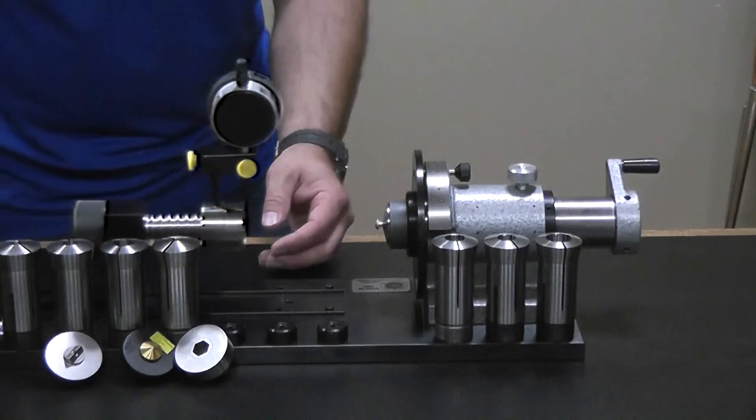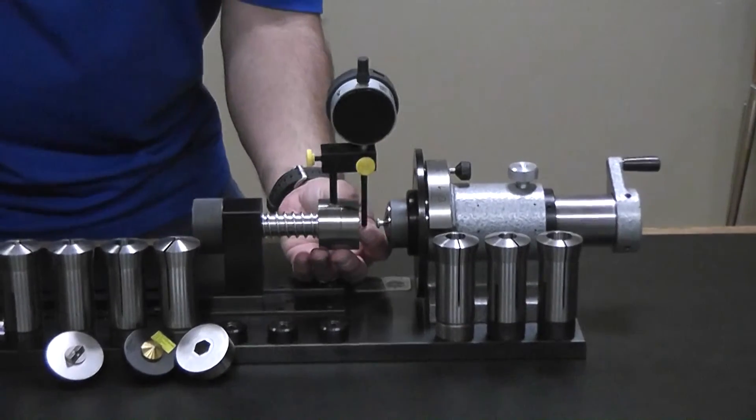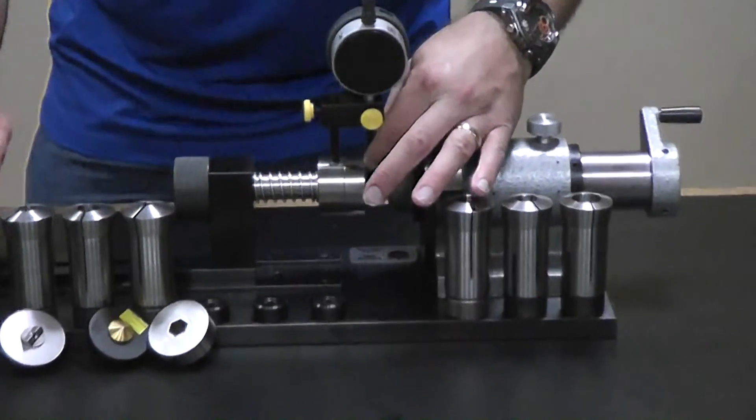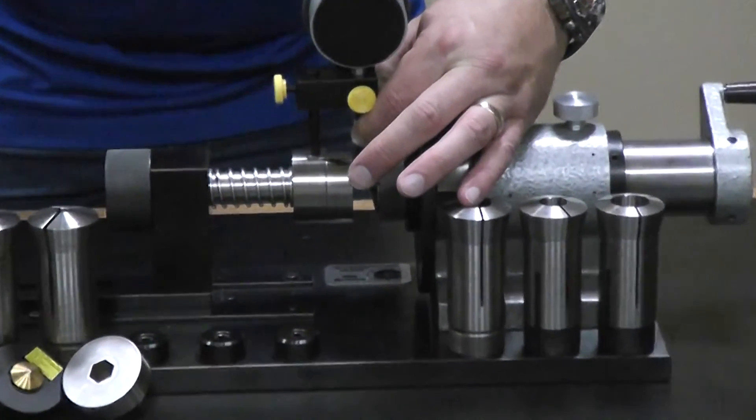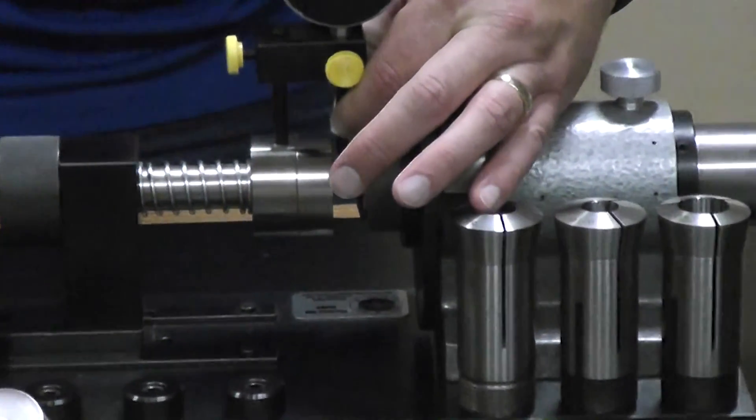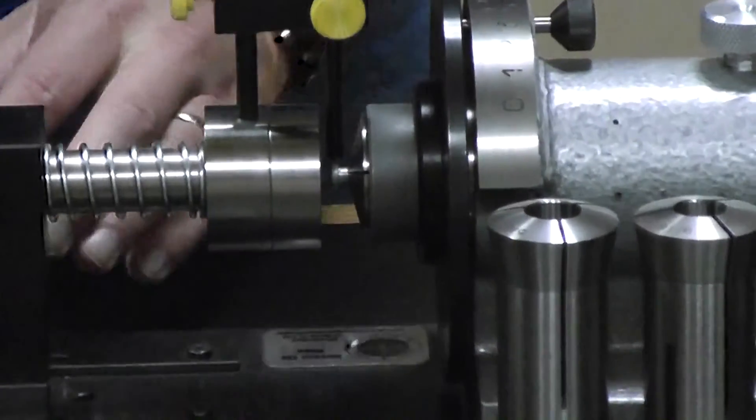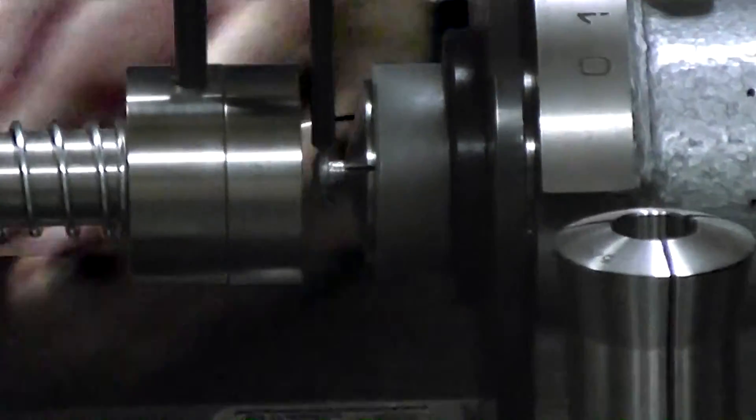Move this up. And at this point, we slide our tail stock over again. We can raise our indicator. Position everything over the top of the head. Lock our tail stock back into position.